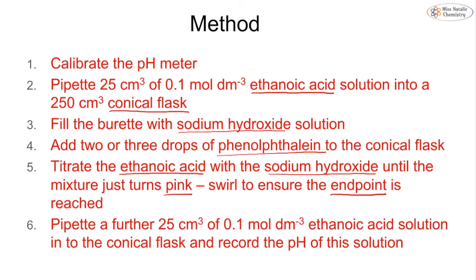It should be a permanent pink colour, and we swirl it just to make sure that the endpoint is reached. If it goes pink and then you swirl it and it goes back to colourless, you are not at the endpoint. The pink colour has to be permanent. Once we've got that endpoint, we then pipette a further 25 cm³ of our ethanoic acid and then we record the pH of the solution using our pH meter.